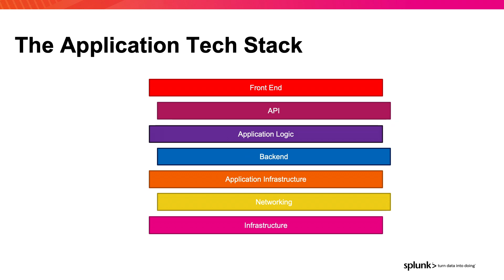This is how I represent the tech stack. It starts from your infrastructure, which could even be bare metal, to your networking layer, your application infrastructure — which is your Kubernetes and your orchestrators — to your backend, which is your database, to your application logic, which blurs the boundaries. This is because you're going to have a lot of services that don't show up to the end user, but are a big part of your application. Then to the API, where you have internal and external interfaces with your services, and the front end — what the user sees. There's a lot involved in each of these layers.